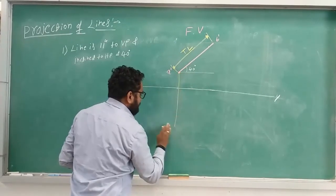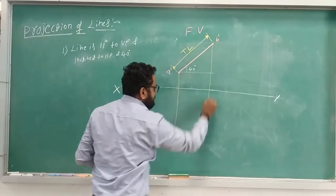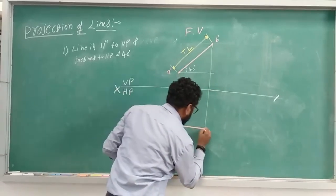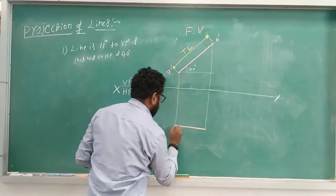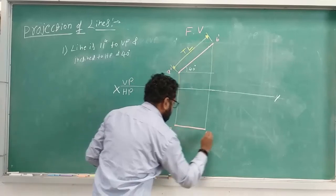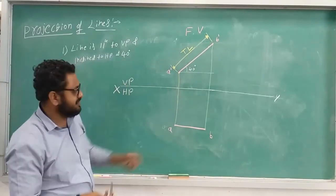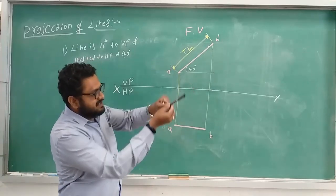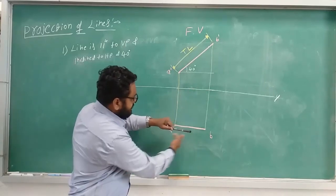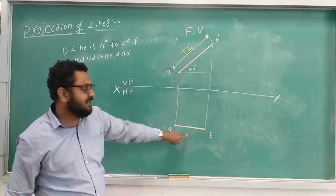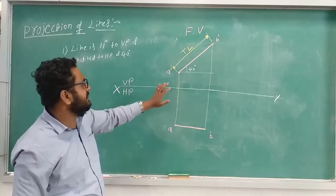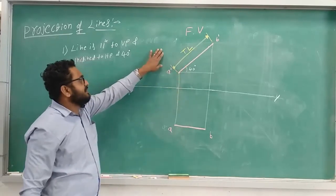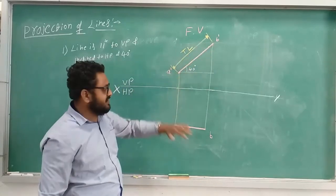We draw projection lines through points A' and B' from the front view. In the top view, A' and B' are projected down — see that the length is reduced because of the inclination. When you see it from the top, the length reduces and the change in length can be measured here. This is how the front view and top view look when the line is parallel to VP and inclined to HP. Because of the parallel condition to VP, the front view gives the true length.